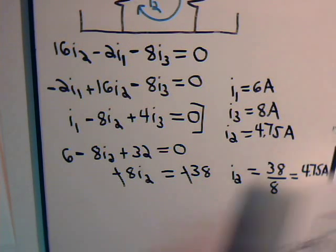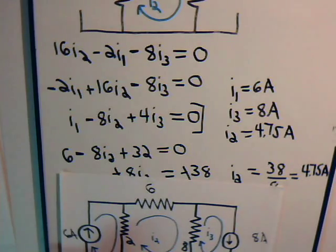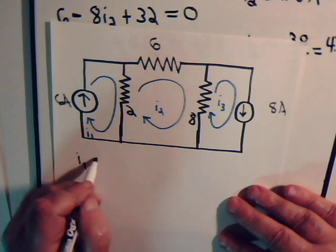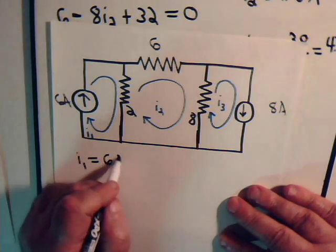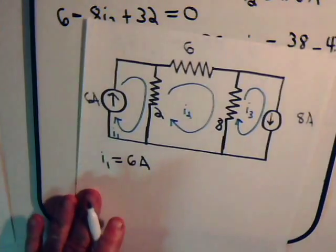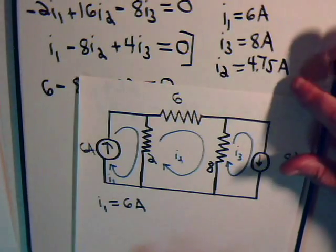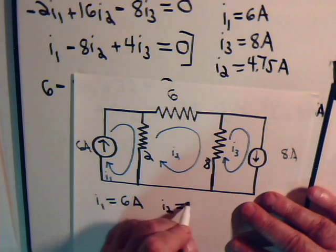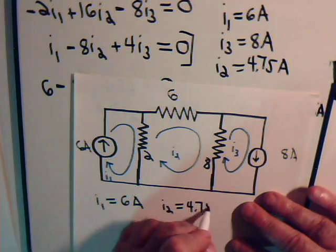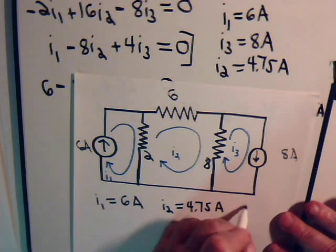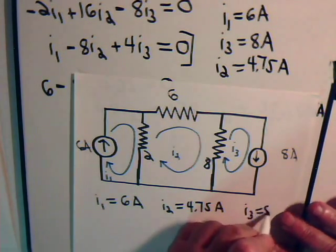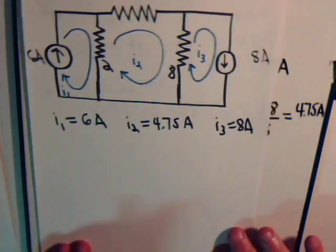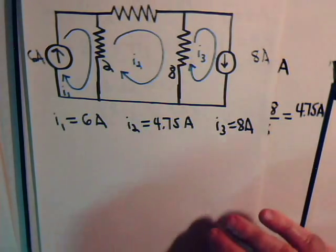Let's go to our original circuit. I1 is 6 amps. I2 is 4.75 amps. I3 is 8 amps.